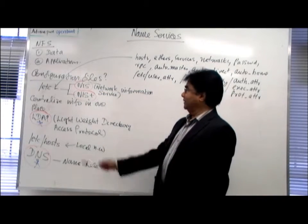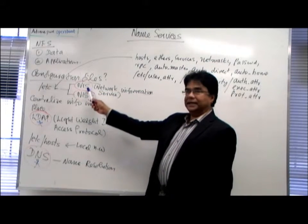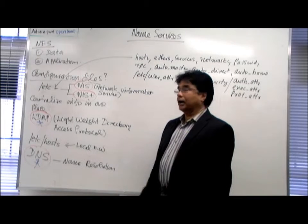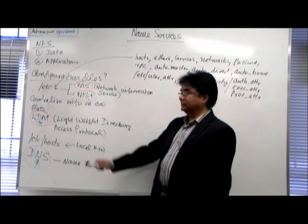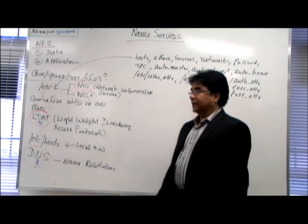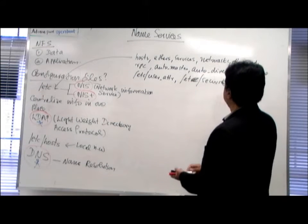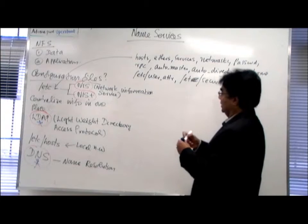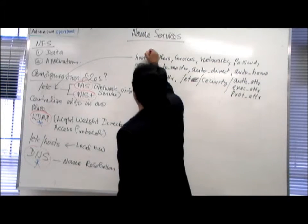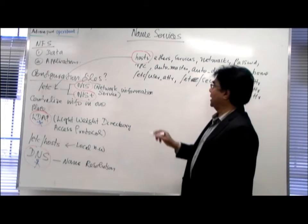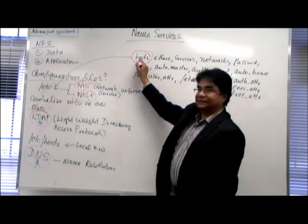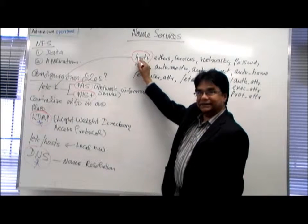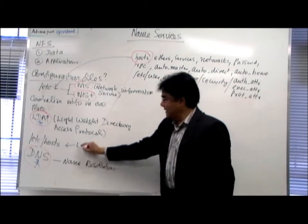So, how do we put all of them in one central place? For that, we have to configure NIS or NIS plus. But if I want to put only the ETC hosts file in one central place, then we have to use DNS.